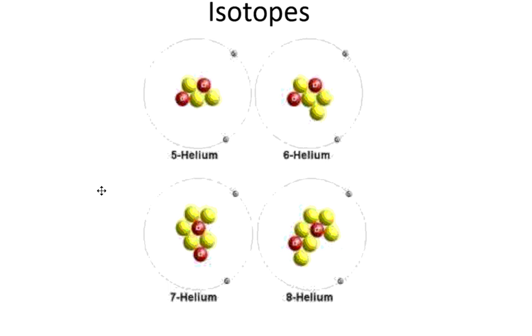One of those things is isotopes. An element has a particular number of neutrons. Helium, for instance, has two protons and two neutrons. However, if you were to add neutrons to helium, you would have an isotope of helium. An isotope is just an atom of an element that has a different number of neutrons. Isotopes differ in neutrons only, not protons, not electrons.